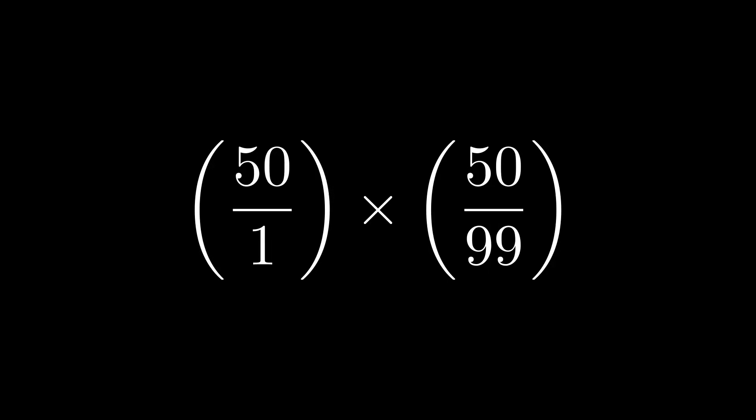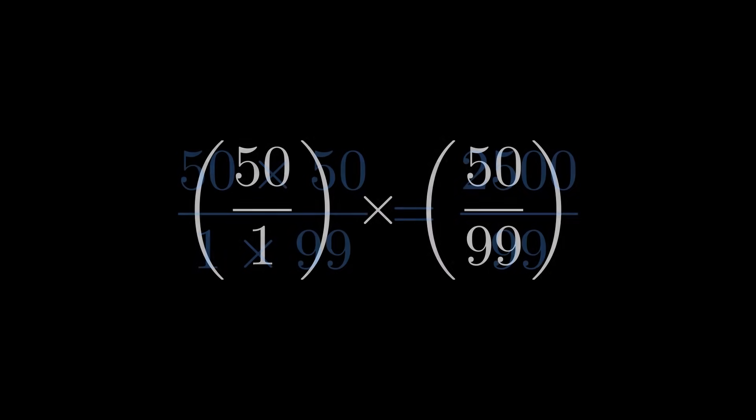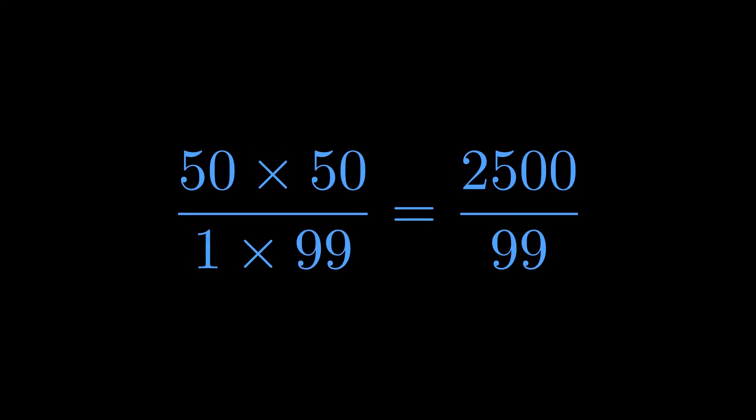The real magic happens when we pair terms from the outside in. Watch what this reveals. Let's take the very first term and multiply it by the very last term. We get 2500 over 99, and since 2500 is way bigger than 99, this product is definitely greater than one.